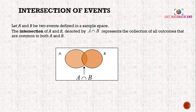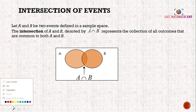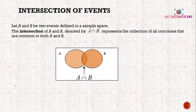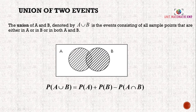We will look at the intersection of events. Let A and B be two events defined in a sample space. The intersection of A and B, denoted by A intersect B, represents the collection of all outcomes that are common to both A and B. In the middle of the Venn diagram, we call it A intersect B.